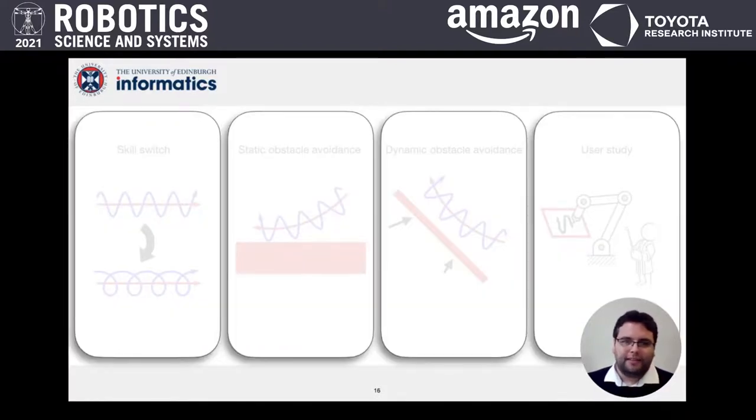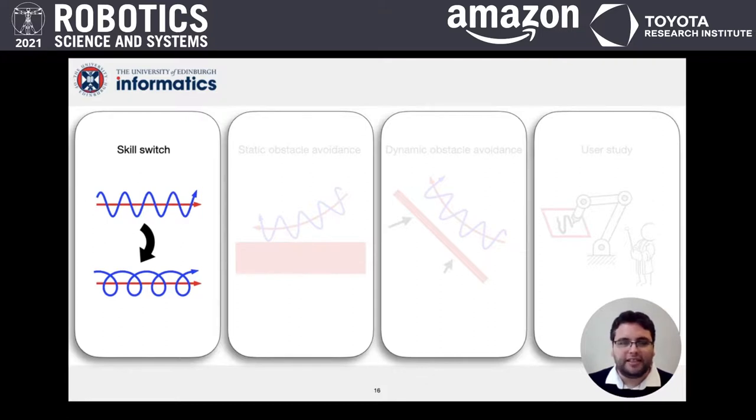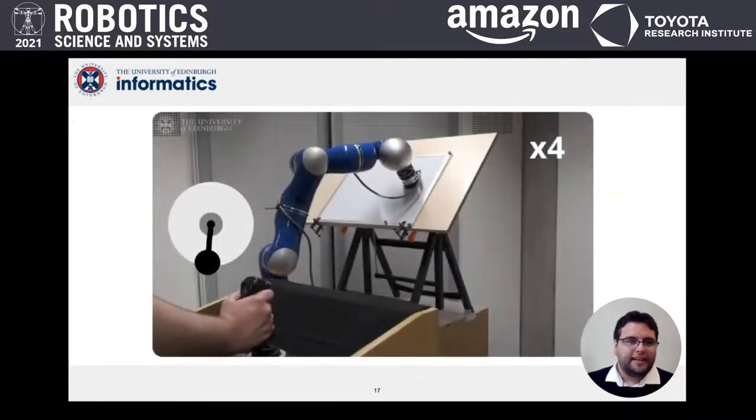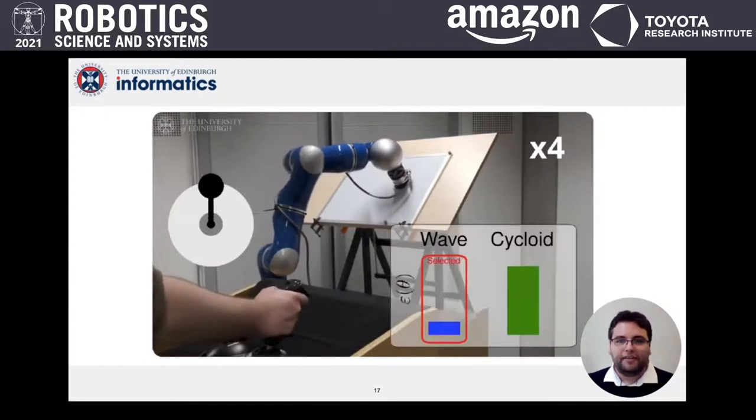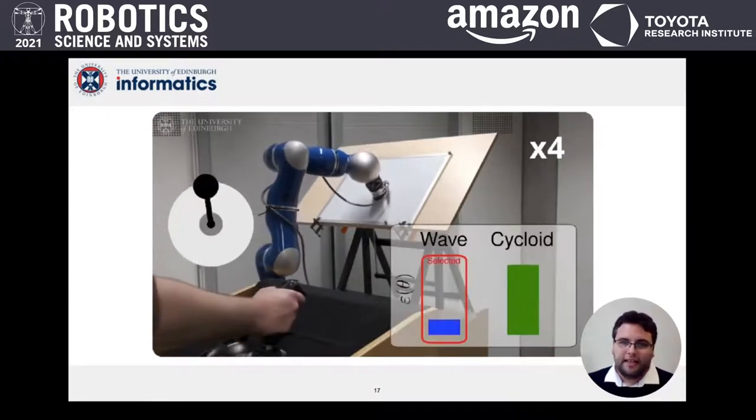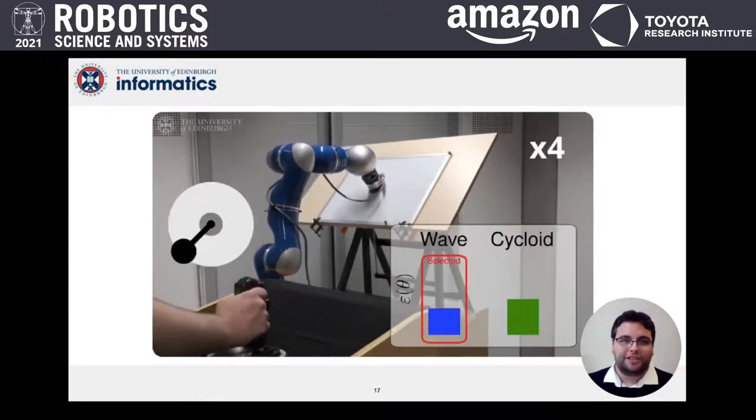We have evaluated our method by conducting four experiments. The first highlights the method's ability to adapt to changes in the operator's intention. We detect a change of intention by comparing the costs of a number of skills and choose the best fitting model, as shown in the video.